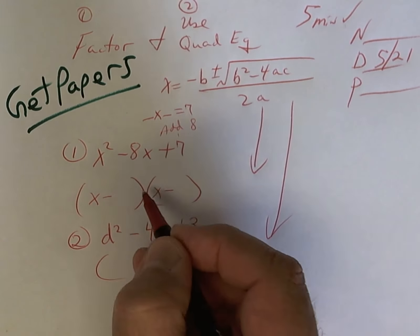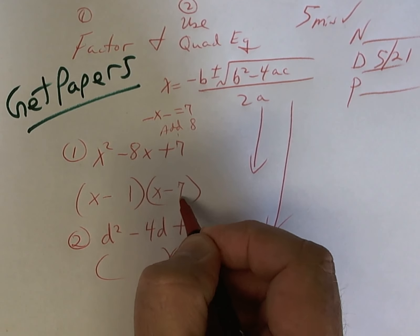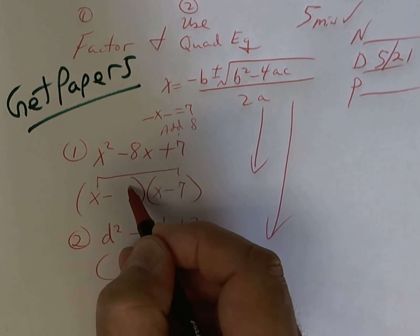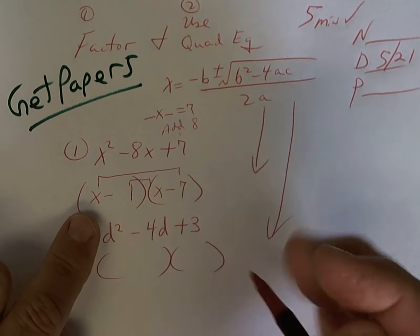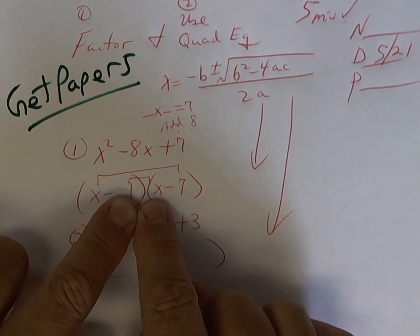Well, the only thing that works is one and seven. You were taught to check your outer and your inner. So a negative seven and a negative one gives you a negative eight.